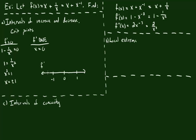We test a single number inside each interval. I'll pick negative 2 from the leftmost interval. Putting negative 2 into the derivative gives 1 minus 1 over (negative 2) squared, which is 1 minus 1 fourth, which is 3 fourths — positive. So this entire interval has a positive derivative. There's no way any value on this interval gives a negative derivative, because any transition would have to pass through a critical point first. Next, putting negative 1 half in gives 1 minus 4, which is negative.